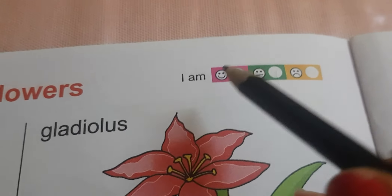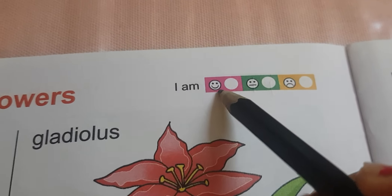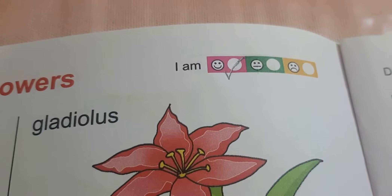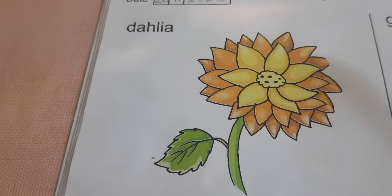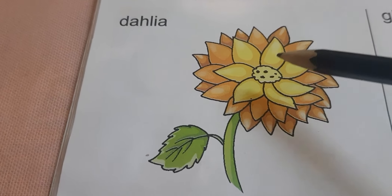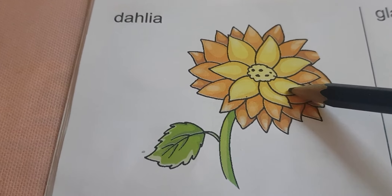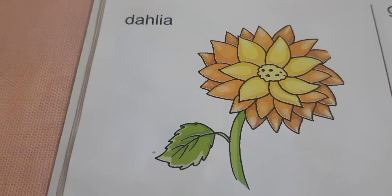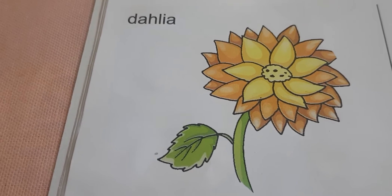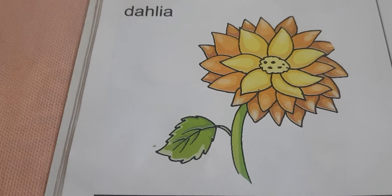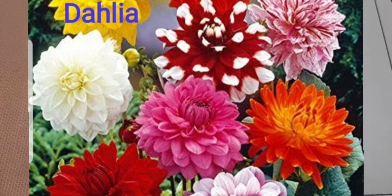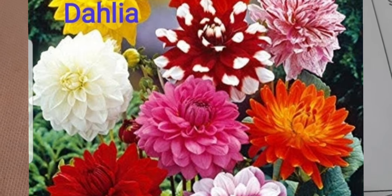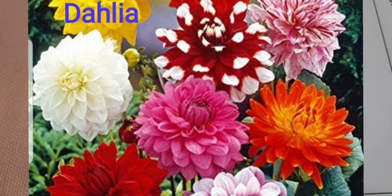I am feeling happy! So the first picture is of dahlia. Dahlia is a very very beautiful flower. You can see the real picture of dahlia, I am just sharing it. Dahlia comes in different colors and it's a very very beautiful flower.